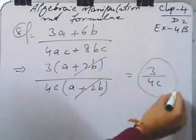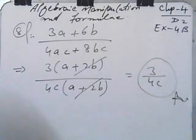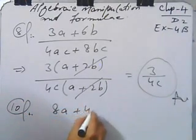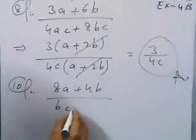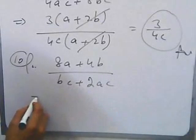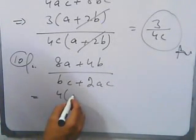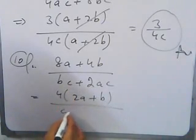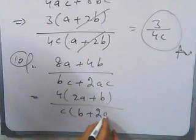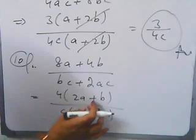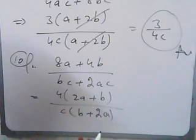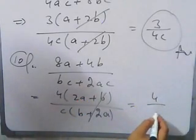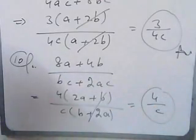Question number 10: (8a + 4b) divided by (bc + 2ac). Take common 4 from the numerator to get 4(2a + b). From the denominator take common c, giving c(b + 2a). Since b + 2a and 2a + b are both positive and equal, they cancel, and your result is 4 divided by c.